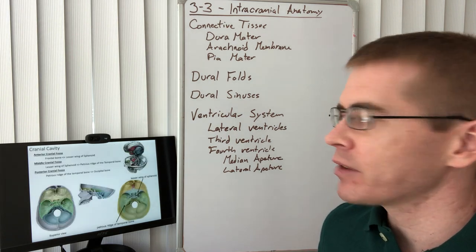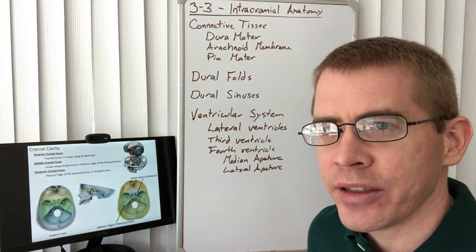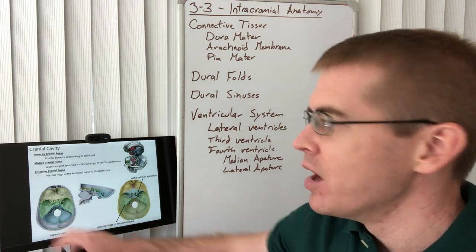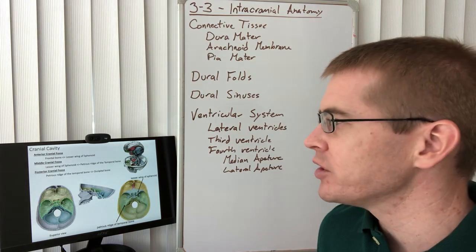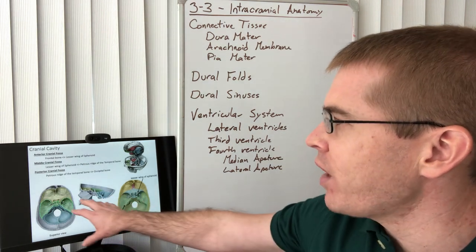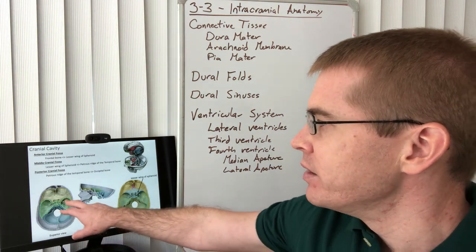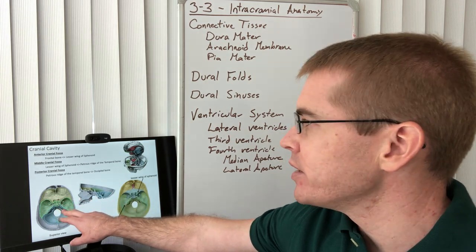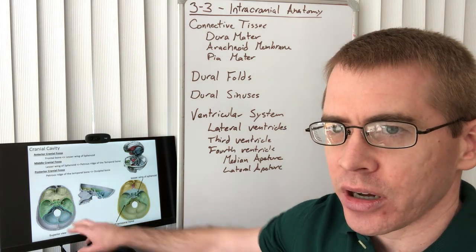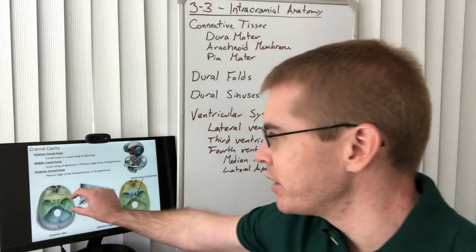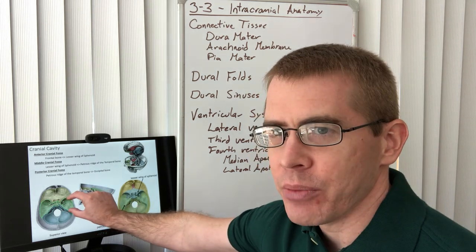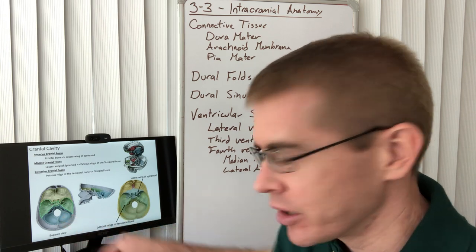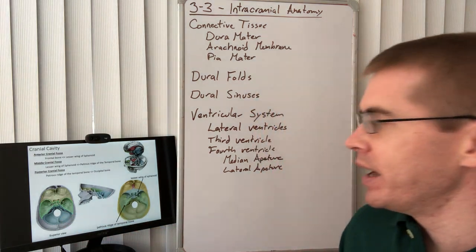Moving right in, first we have to define the different regions of the brain. There is an anterior, middle, and posterior cranial fossa, defined by the lesser wing of the sphenoid as well as the petrous ridge. Those two boundaries make up the middle cranial fossa, with the anterior in front of that and the posterior behind it.